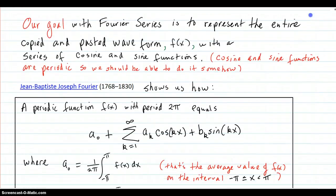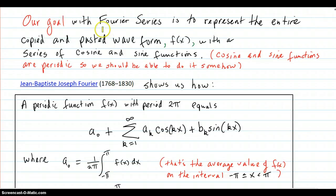So our goal with Fourier series is to represent the entire copied and pasted waveform f of x with a series of cosine and sine functions. Cosines and sines are periodic. So we should be able to do it somehow.